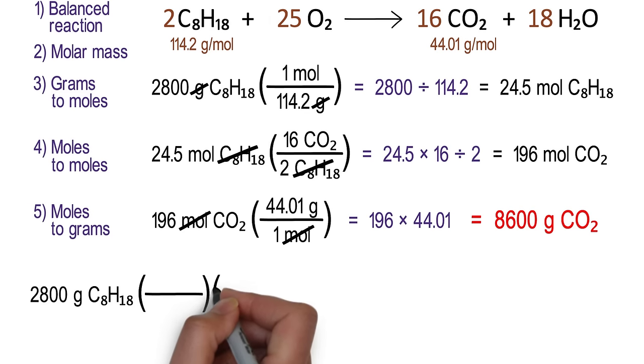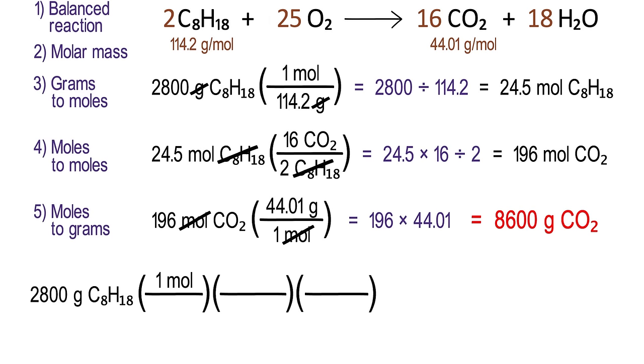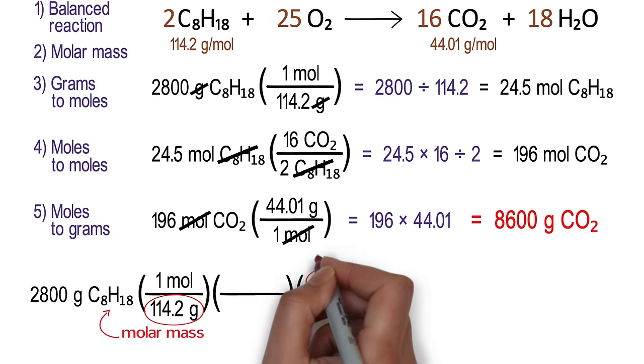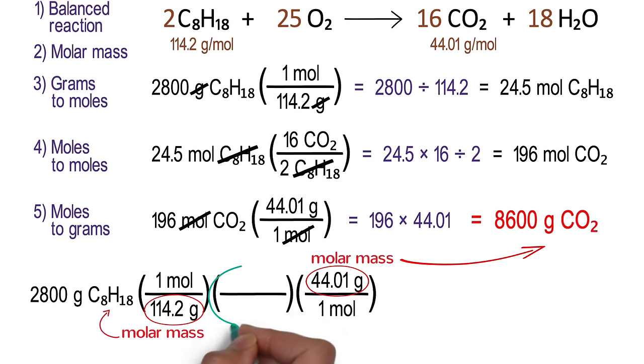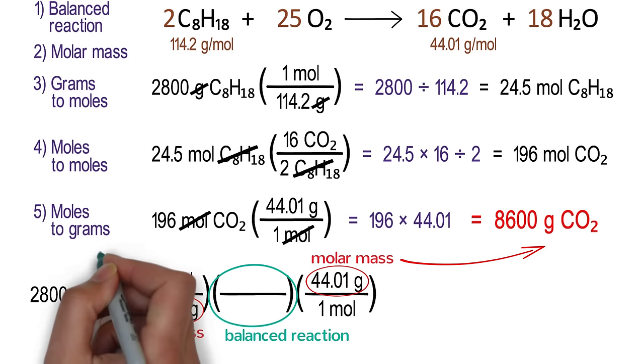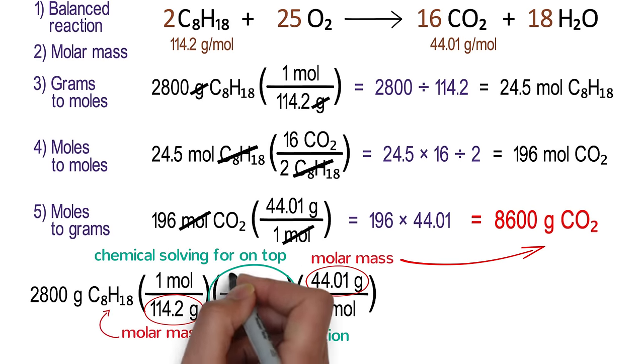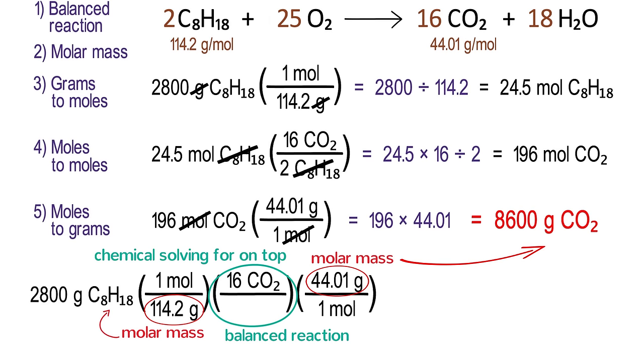What goes inside those fractions is exactly the same as before, and there are a few tricks that can help us remember what goes where. No matter what, one mole always goes in the top left and the bottom right. That reminds us that the other half of those fractions are molar masses. The number on the bottom left, 114.2 grams, is the molar mass of what we're starting with. The number on the top right, 44.01 grams, is the molar mass of what we're solving for. In the middle fraction, we always get the numbers from the balanced reaction. The chemical we are solving for goes on the top, so we put 16CO2 on the top. And the chemical we are starting with goes on the bottom, that is 2C8H18.